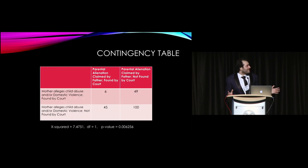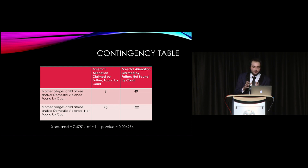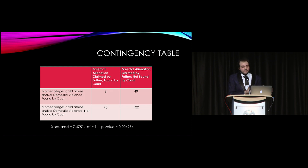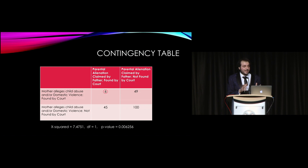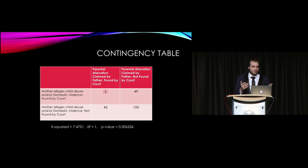For the first claim — that a large number of court cases show a finding of both alienation and abuse — we used a contingency table. The columns represent whether alienation was found or not found by the court; the rows represent whether abuse was found or not found. The key number is six: in only six of the 200 cases was there a finding of both alienation and abuse within the same case. About half had neither found, and roughly 50-50 where one was found and one wasn't. Six out of 200 is obviously very rare and goes against the claims being made.